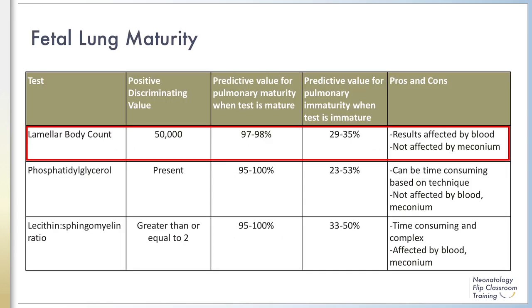There are several tests used to determine fetal lung maturity. Lamellar body counts are currently the most common test, as they measure surfactant production by type 2 pneumocytes. A hematology analyzer can be used to quantify lamellar bodies because of their similar size to platelets. Values less than 15,000 per microliter are almost always associated with lung immaturity, while values greater than or equal to 50,000 per microliter strongly suggest lung maturity. Results are typically affected by the presence of blood, but not meconium.